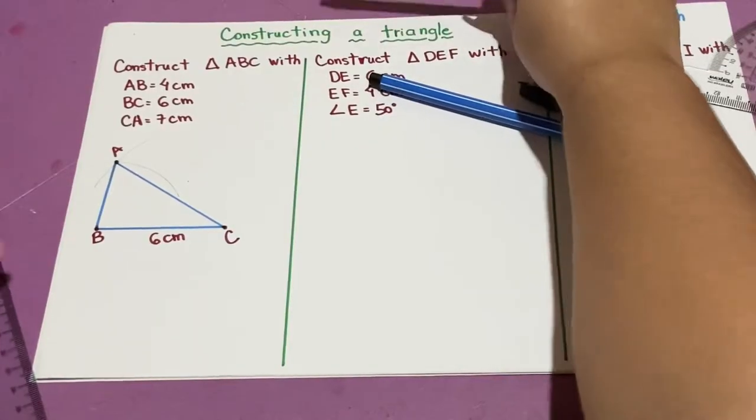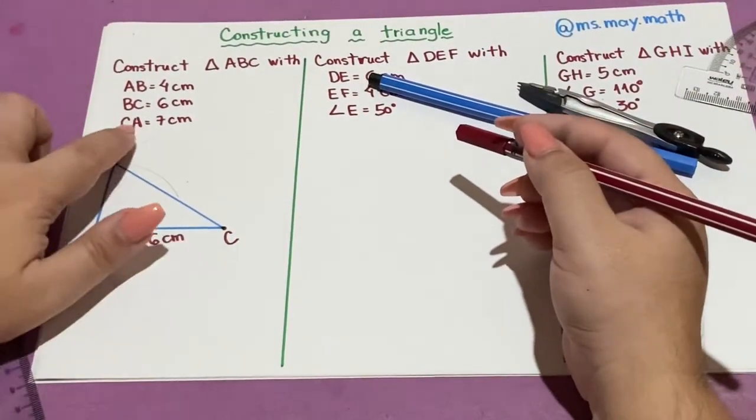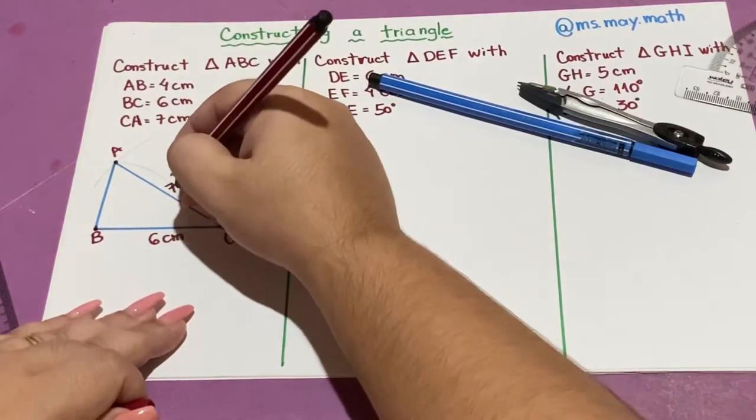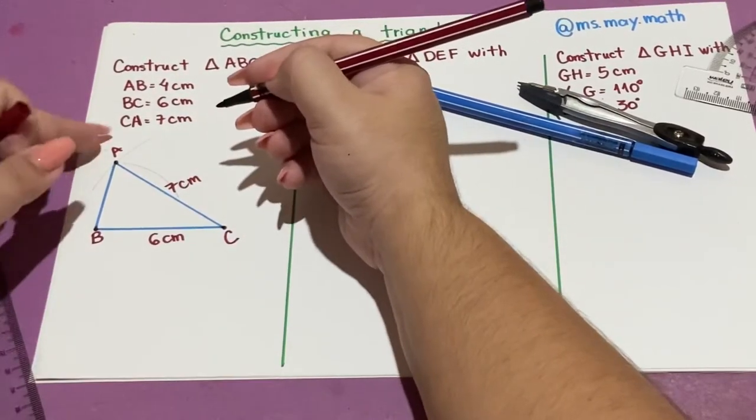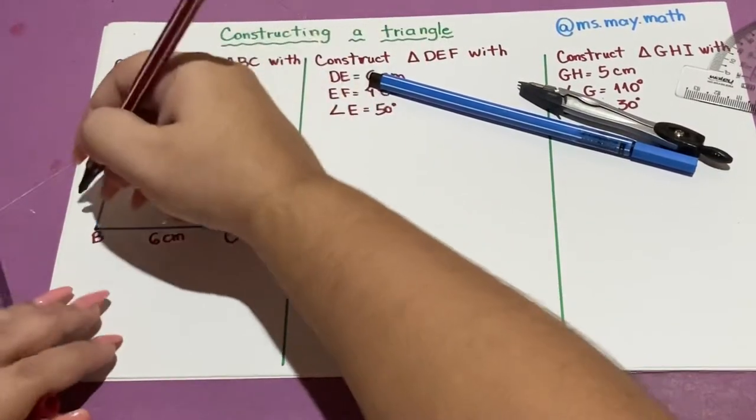Don't forget to label the sides. AC or CA is 7 centimeters, and AB is 4 centimeters.